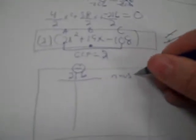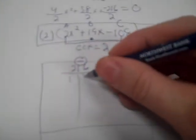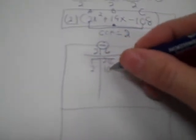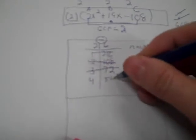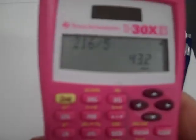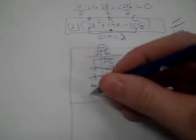A times C gives −216, so that's a minus combination trying to reach 19, which is positive. Checking factor pairs: 1 and 216 — no; 2 and 108 — not 19; 3 and 72 — 72 minus 3 isn't 19; 4 and 54 — 54 minus 4 is 50; 5 gives a decimal; 6 and 36 — 36 minus 6 isn't 19; 7 is a decimal; 8 and 27 — 27 minus 8 is 19. Yes!